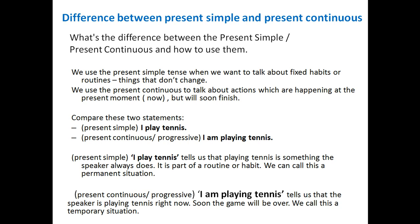We use the present simple when we want to talk about fixed habits or routines — things that don't change. We use the present continuous to talk about actions which are happening at the present moment. Compare these two statements: one is present simple and the second is present continuous. 'I play tennis' — present simple. 'I am playing tennis' — present continuous, formed with am/are plus a verb with -ing.